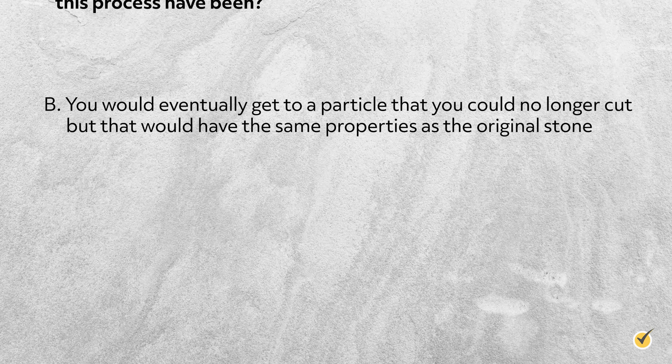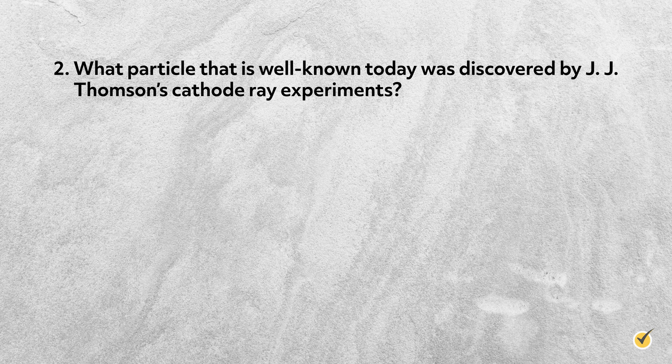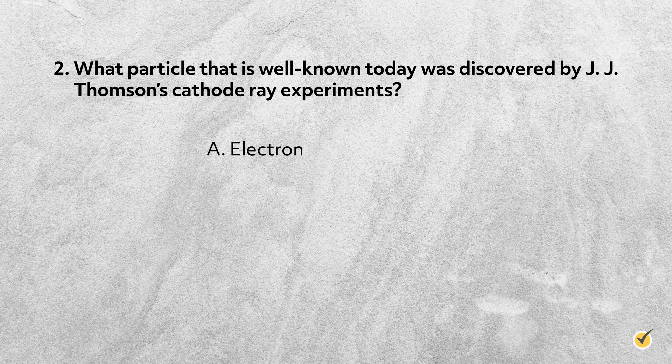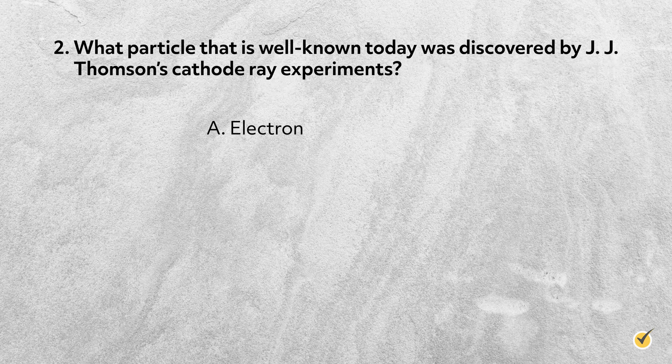Number two: what particle that is well known today was discovered by J.J. Thompson's cathode ray experiments? A: electron. B: proton. Or C: nucleus. The correct answer is A. After debating what the cathode ray consisted of, Thompson determined that the ray was made up of particles that were 1000 times lighter than a hydrogen atom. He originally called them corpuscles, and the name was later changed to electron.